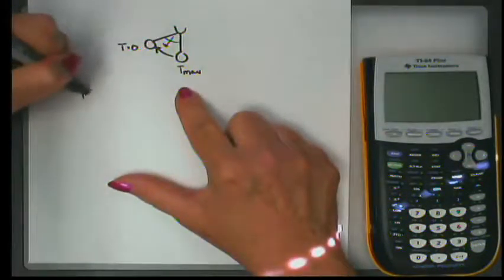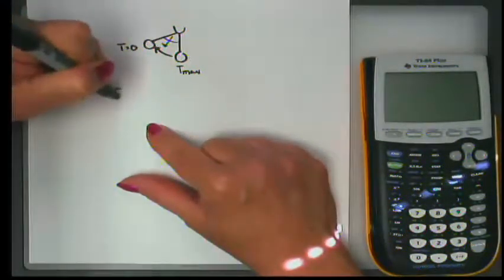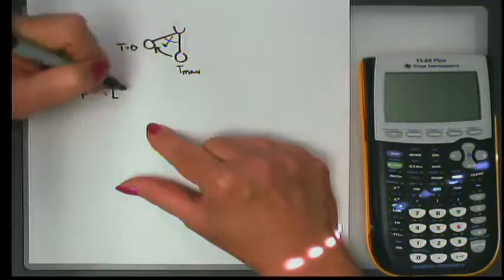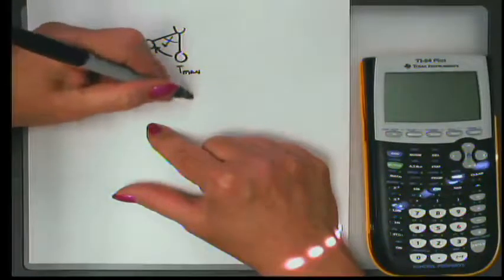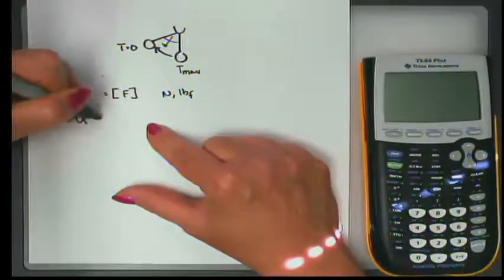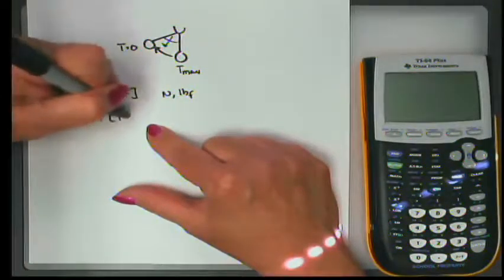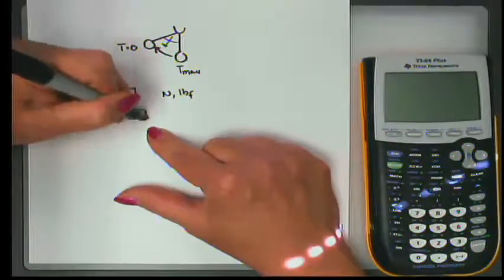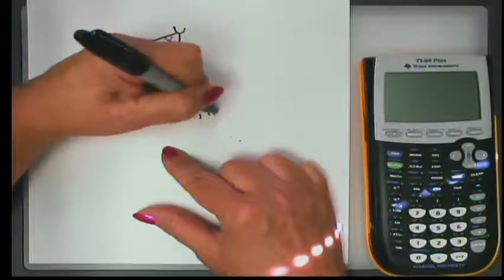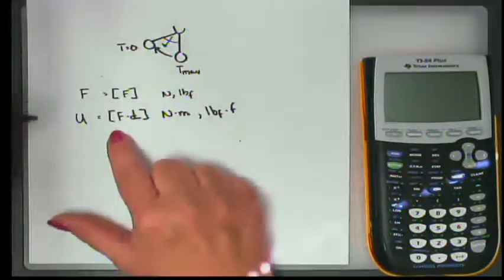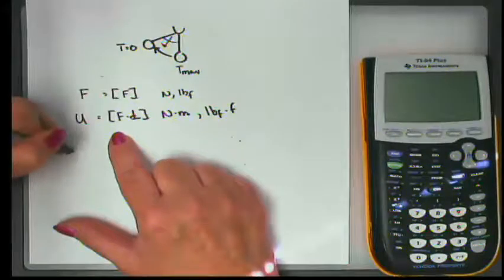So now we have a force. We know what that is. That has dimensions of force, Newtons, pounds of force. We've talked about work has dimensions of a force acting through a distance or a length. So we might have newton meters or foot pounds.